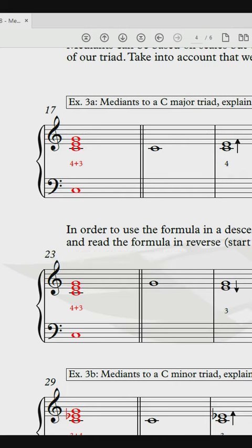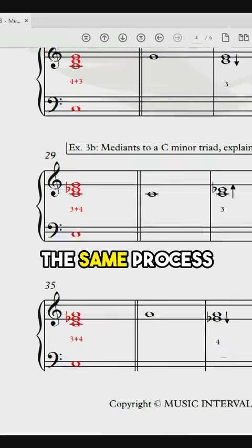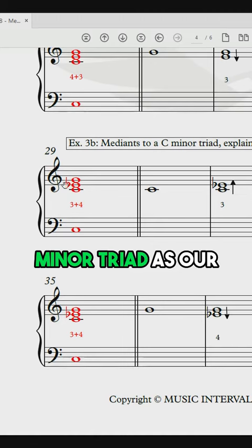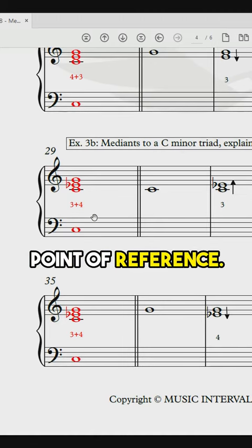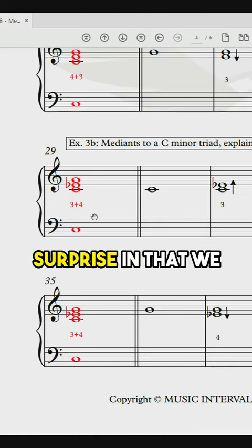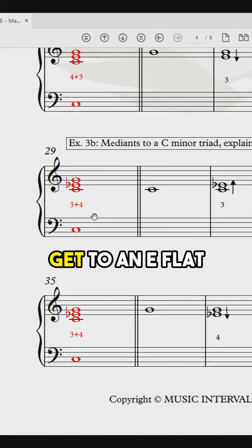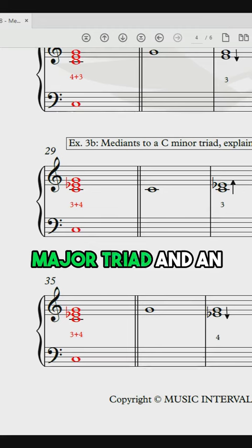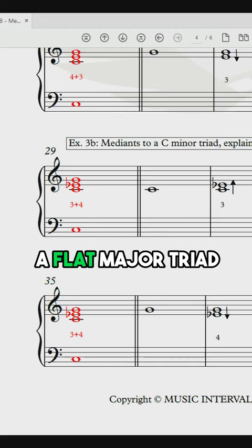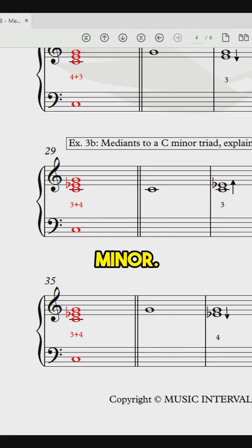At example 3B, you see the same process but applied to a minor triad as our point of reference. And there is no surprise in that we get to an E-flat major triad and an A-flat major triad when we start on C minor.